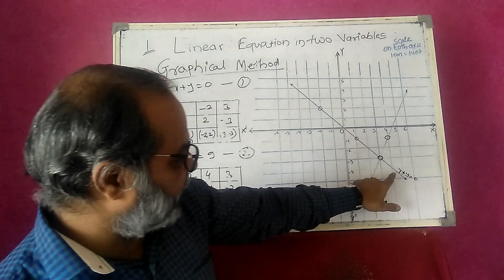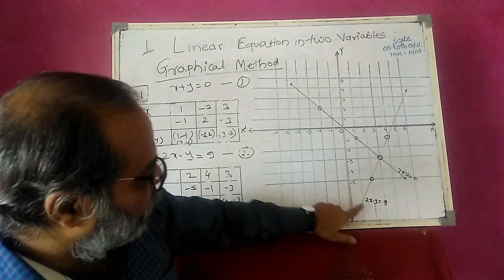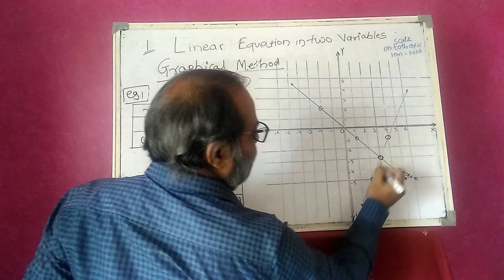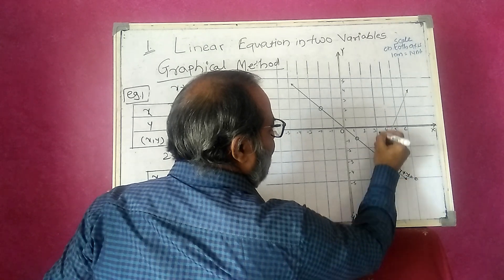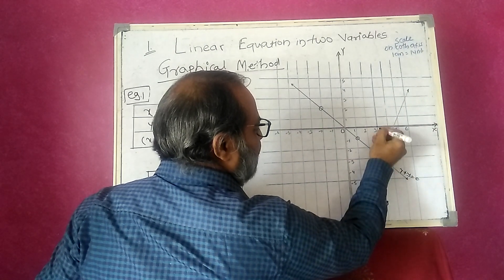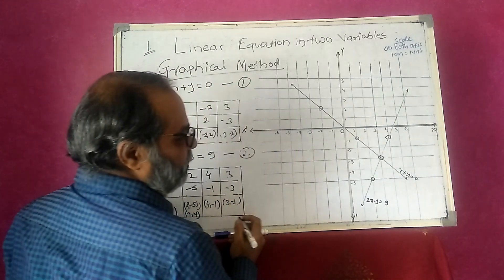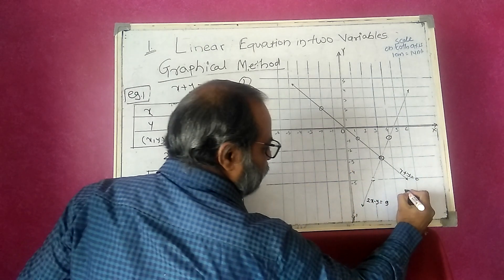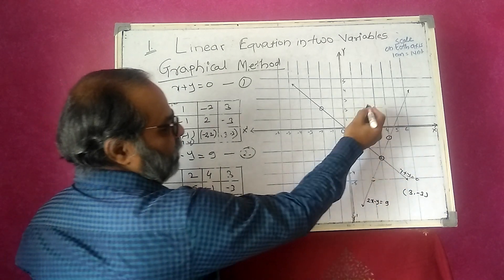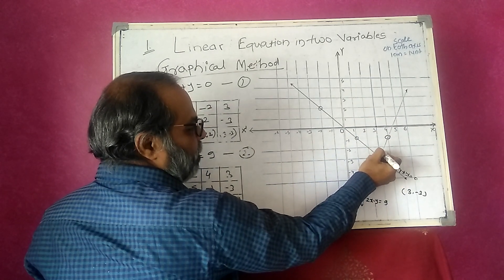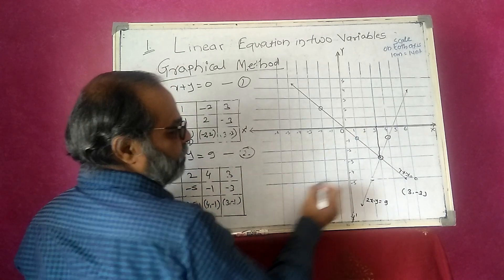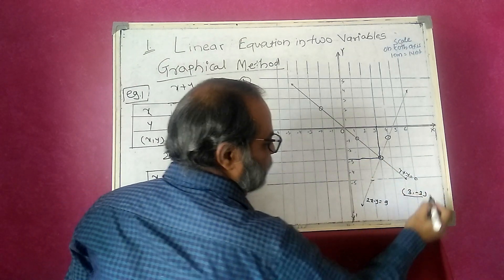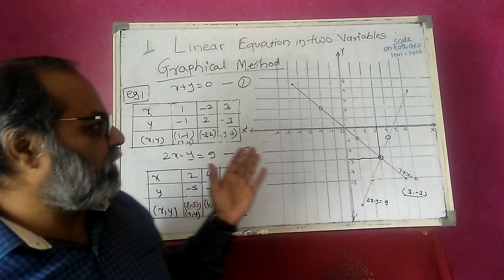Concentrate on the two lines — x plus y is equal to 0 and 2x minus y is equal to 9. They intersect at a point of intersection. I draw a perpendicular to the x-axis from the intersection point; it touches 3. I draw a perpendicular to the y-axis; it touches minus 3. So the solution is (3, -3).